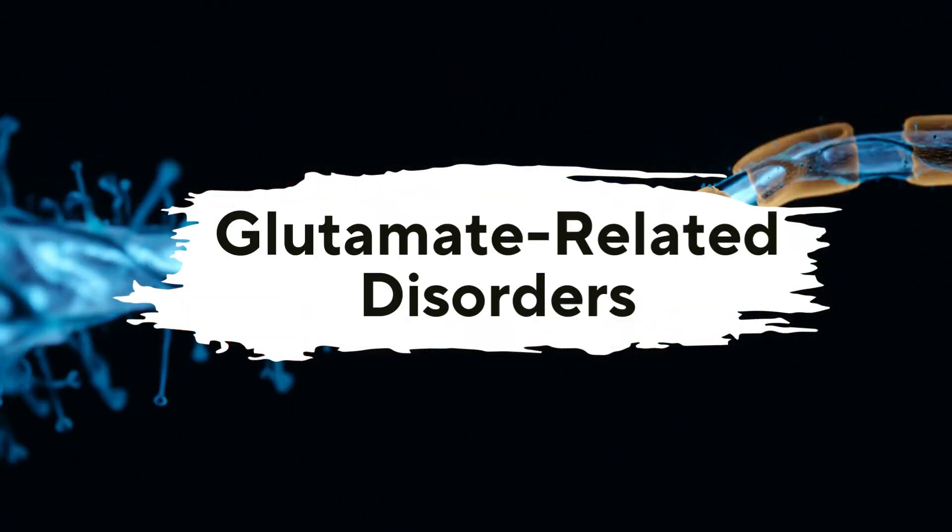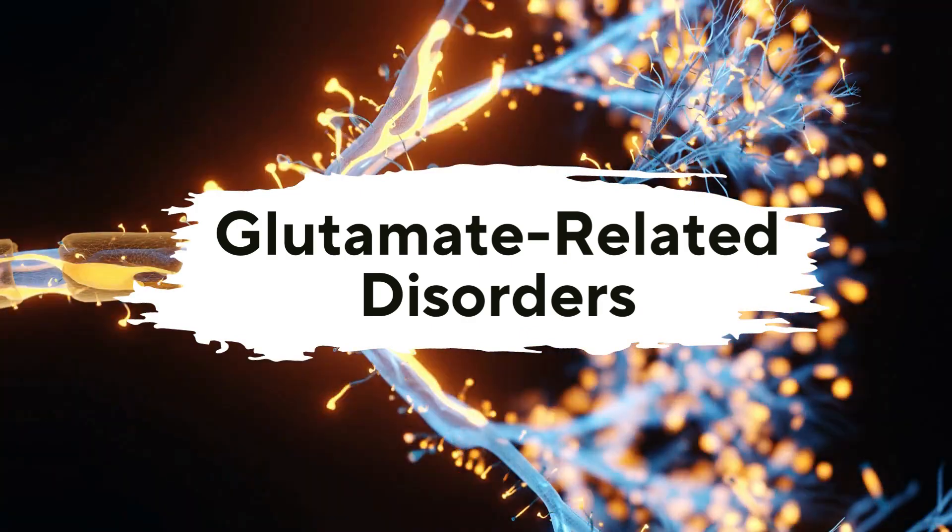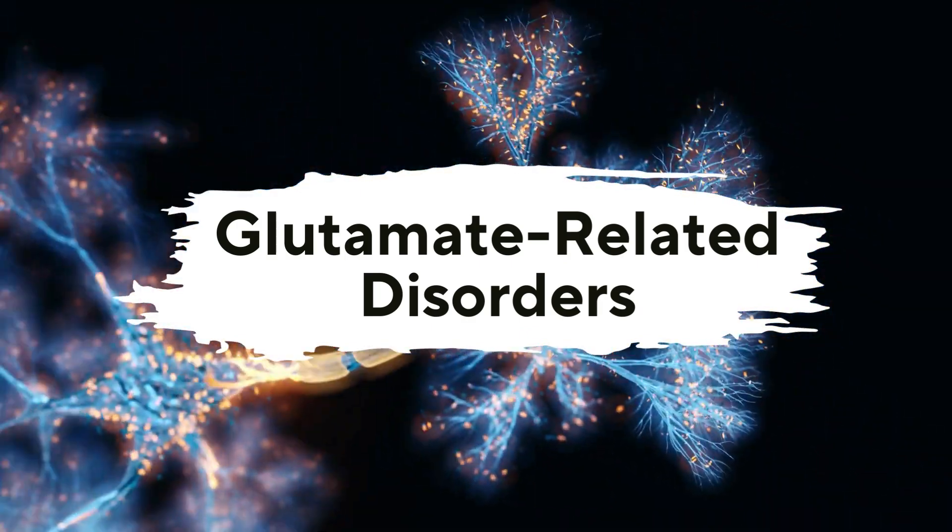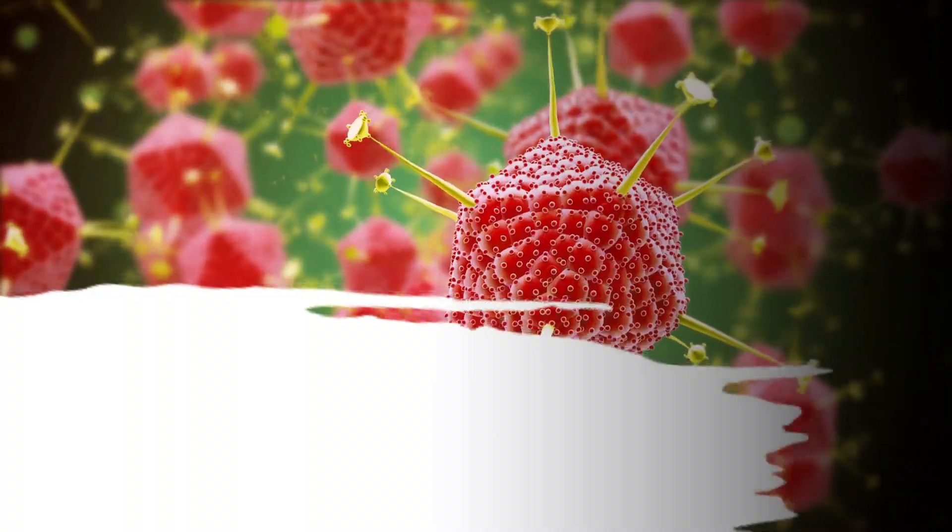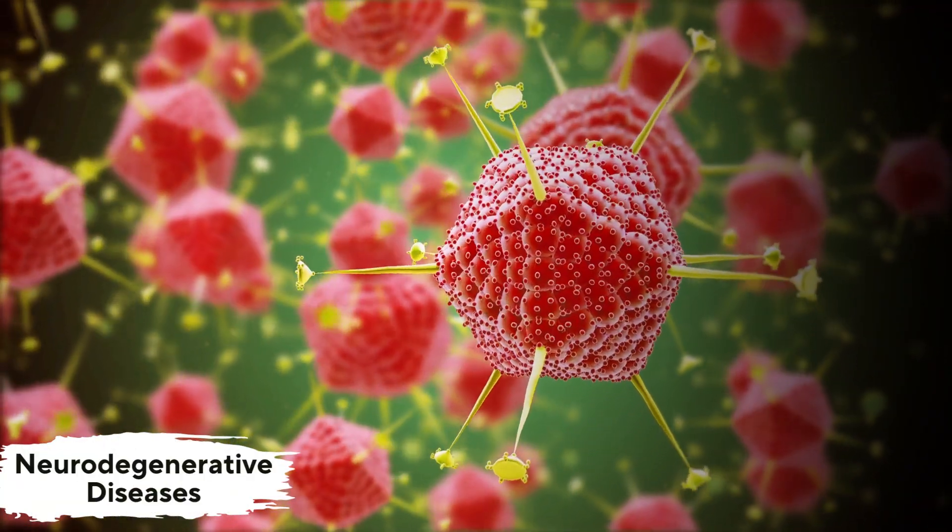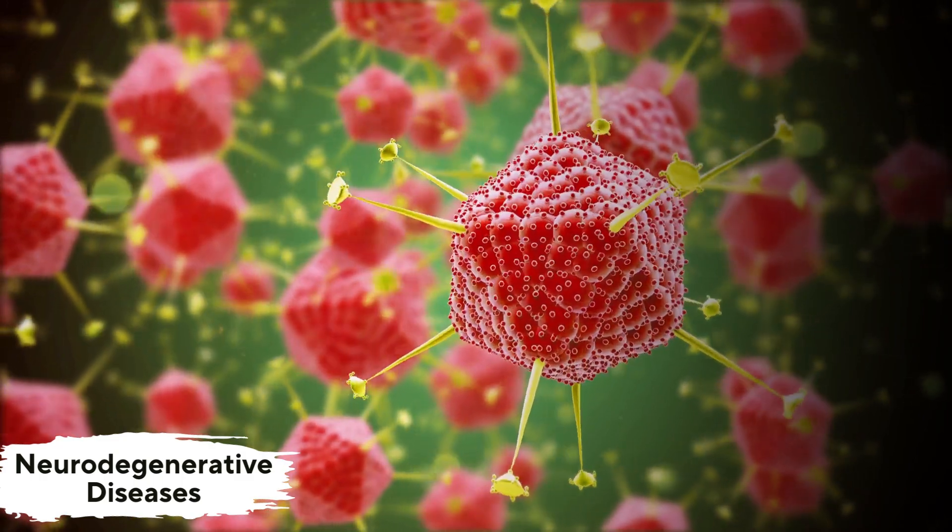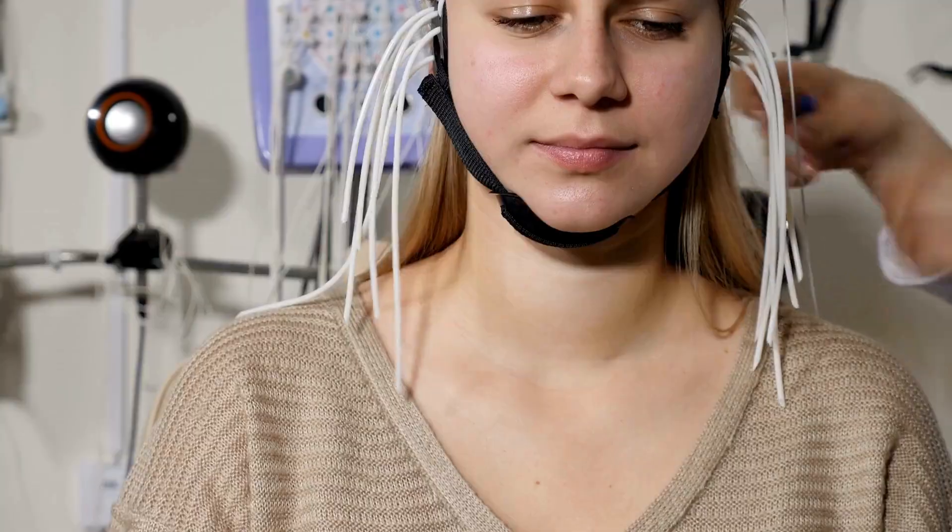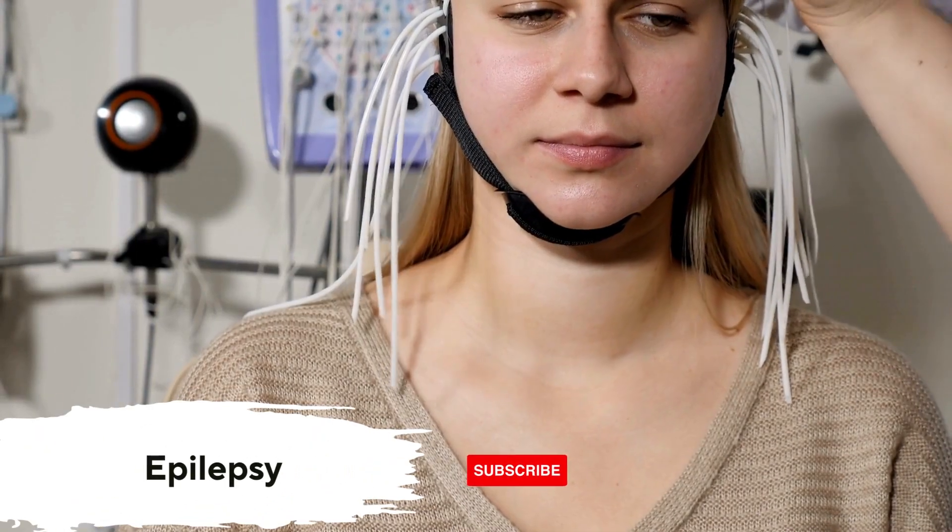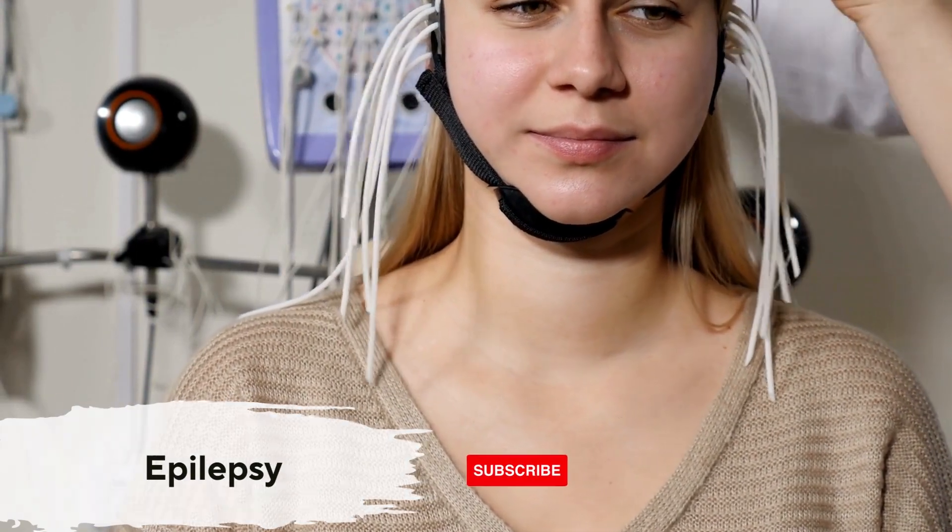Glutamate-related disorders. Dysregulation of glutamate signaling has been implicated in various neurological and psychiatric disorders. For example, in neurodegenerative diseases, excessive glutamate release can lead to excitotoxicity, a process implicated in conditions like Alzheimer's disease and Parkinson's disease. In epilepsy, abnormal glutamate signaling can contribute to seizure activity.